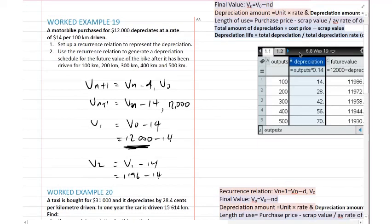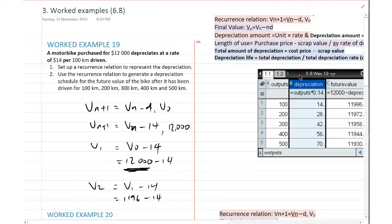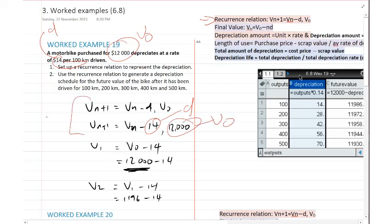We're setting up a recurrence relation to represent the depreciation. The recurrence relation is v_{n+1} = v_n minus d, and v0 is our starting value. Here d is $14 per 100 kilometres, so our d is 14. That gives us our recurrence relation.